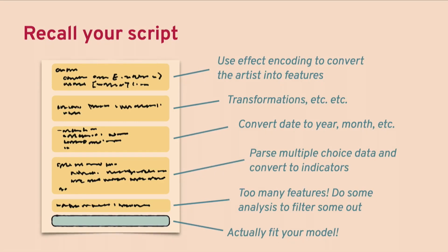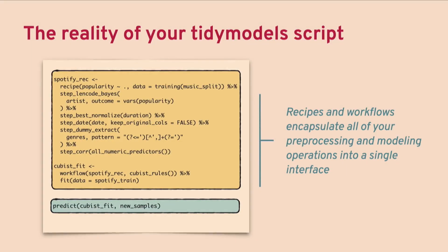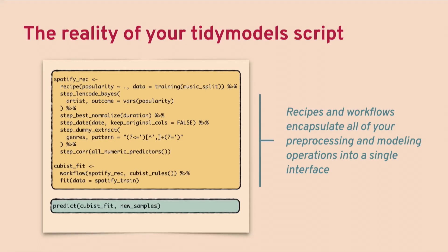Parts of these scripts have probably never been unit tested — it's just stuff you've had along for the ride for a few years. We can convert that into a recipe. In that yellow box you see a series of steps that do all the things we talked about. You might use step_date() to take the date field and convert it to new features like month and year. The next step parses the multiple-choice columns to get all the genres and make indicator variables.